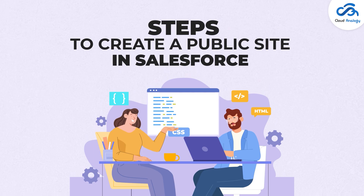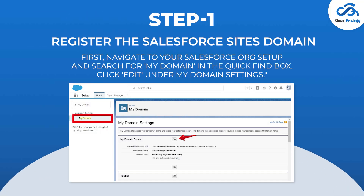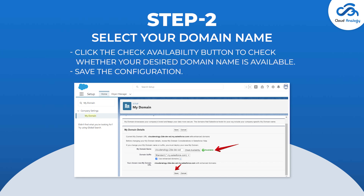Let's dive into the steps to create a public site in Salesforce. Step 1: Register the Salesforce site domain. First, navigate to your Salesforce org setup and search for My Domain in the Quick Find box. Click Edit under My Domain Settings. Step 2: Select your domain name according to your organization's needs and check availability. Click the Check Availability button to check whether your desired domain name is available, then save the configuration.